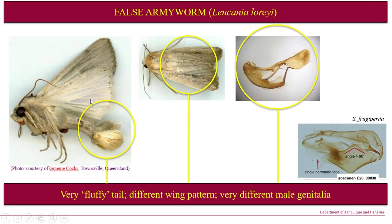A close relative of the same family but different genus is the false armyworm, which is being picked up as bycatch in the pheromone traps. This is easy to tell apart because it's slightly larger, has a very fluffy tail, and its markings are much bolder than the fall armyworm. If you do have scales, the wing pattern is different. Importantly, a dissection of the male genitalia reveals a very different shape to that of frugiperda, as you can see here. The traps coming to us for diagnostics have only had this other species present, and this species is known from Australia, or Queensland at the very least.